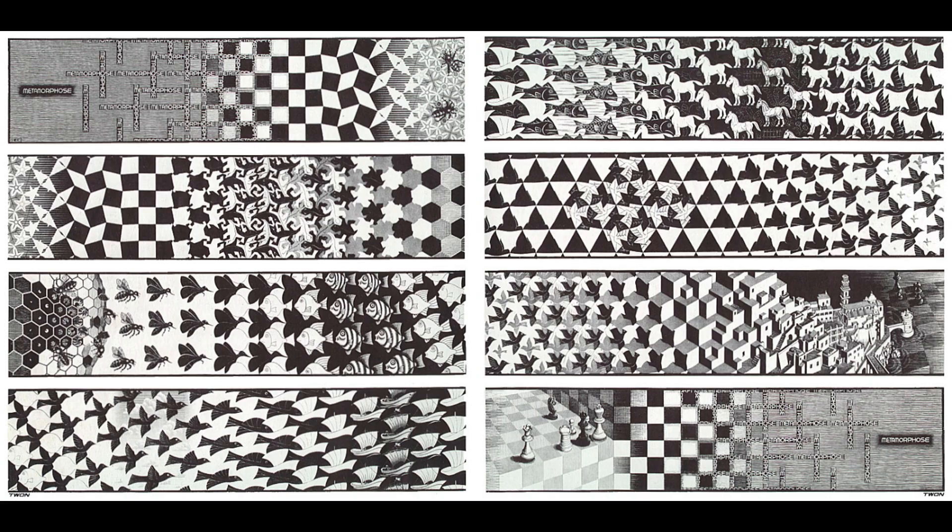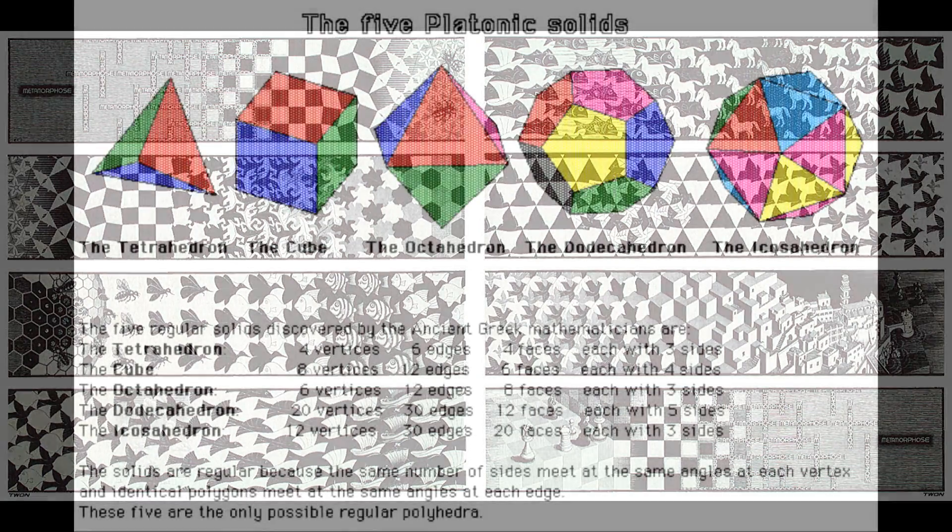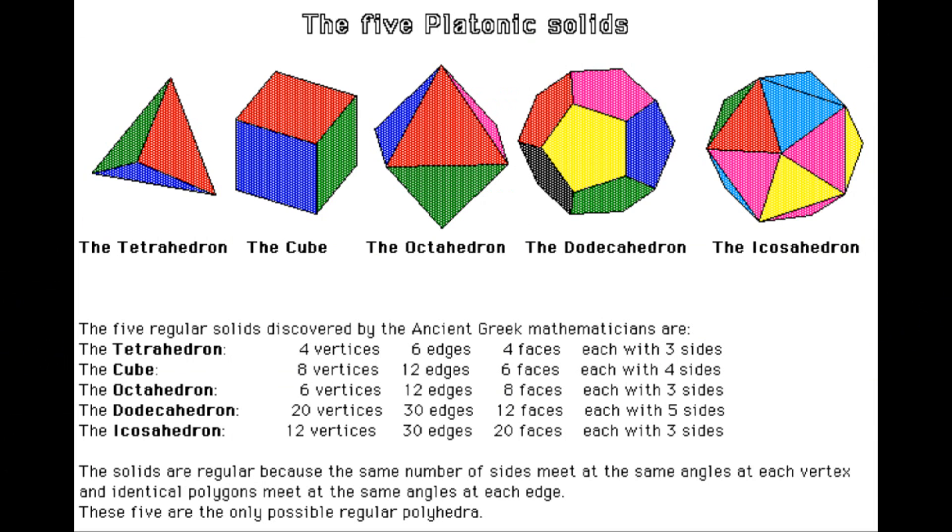In the same way that only certain shapes will tile the two-dimensional plane, only certain shapes will tile the three-dimensional plane. These shapes are known as the platonic solids. The five platonic solids are the tetrahedron, the cube, the octahedron, the dodecahedron, and the icosahedron.